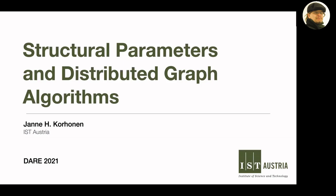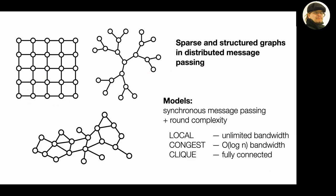So we're talking about sparsity and structure in distributed message passing. I'm going to skip over the traditional definitions of LOCAL and CONGEST. I hope you listened to the previous talk. But just as a recap: LOCAL is the one with unlimited bandwidth, and CONGEST is the one with the log n bandwidth. I'm focusing more on CONGEST in this talk, but I'll mention some things about LOCAL.